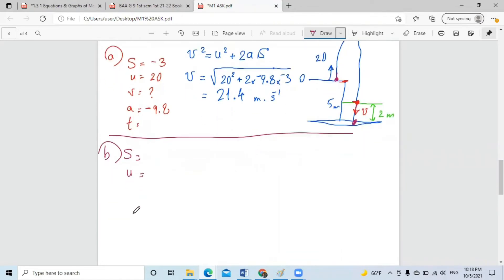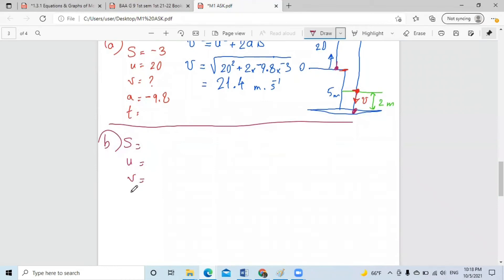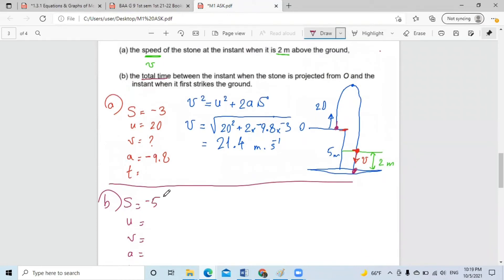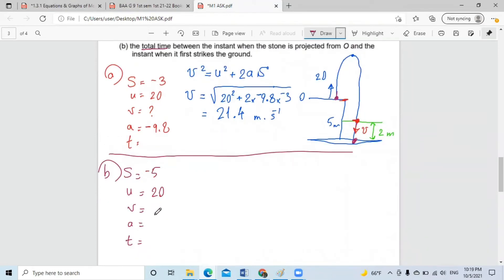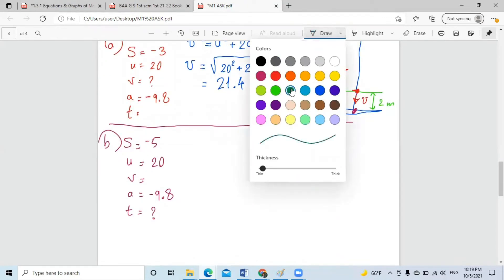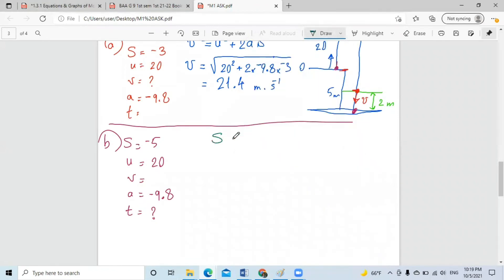So what are the information that we have? The displacement is negative five. The initial speed is still 20. They ask about the time, and we know that the acceleration is negative 9.8. So the equation that has no V, it's S equals UT plus half AT squared.